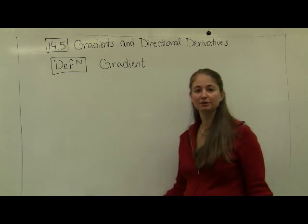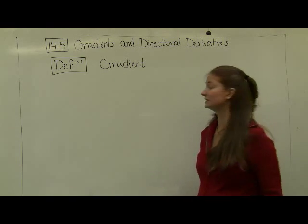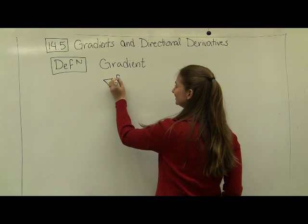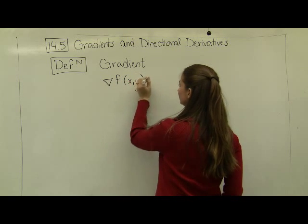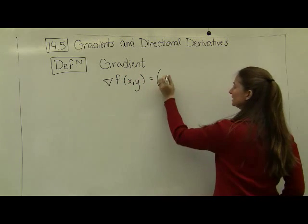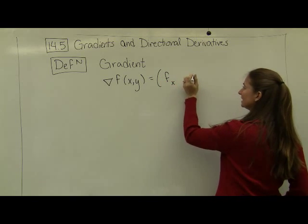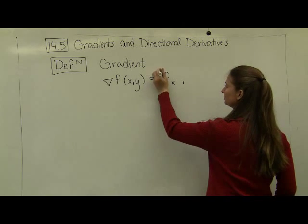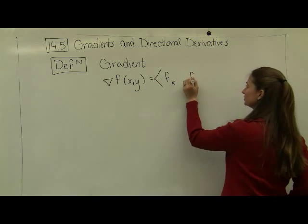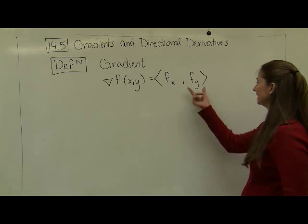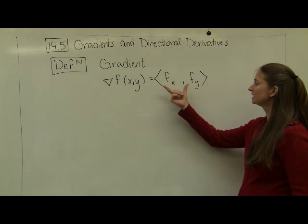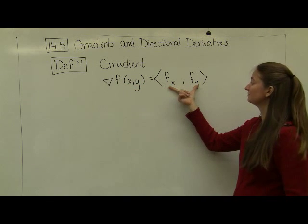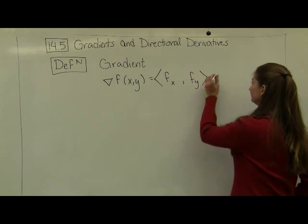So to start off, we're going to jump right in by just defining what a gradient is. A gradient written as an upside down triangle f. If we have a two variable function, this is going to be the partial derivative of f with respect to x, and then the partial derivative with respect to y in the second component. Notice that my inputs are going to be points in R2, whereas my output is a vector. Gradients have outputs that are vectors.